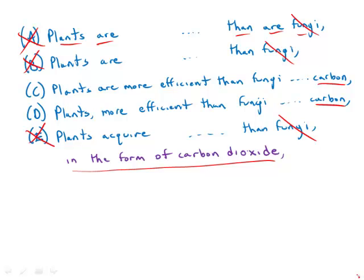In C, what we have is 'plants are more efficient than fungi' - perfect, a very clear, very direct comparison. In D, what we have is 'plants more efficient than fungi,' and what happens is we lose the verb 'are,' and the subject plants has no verb in that form of the sentence. If we read D all the way through: 'plants more efficient than fungi at acquiring carbon in the form of carbon dioxide and converting it to energy-rich sugars' - there's no verb in that sentence.